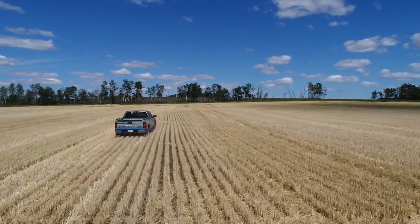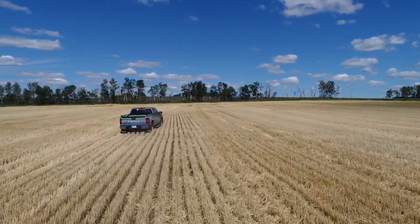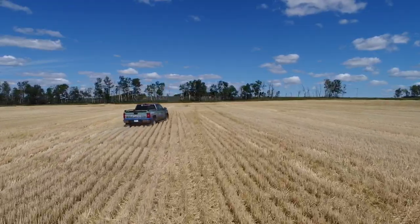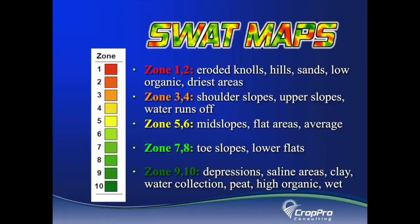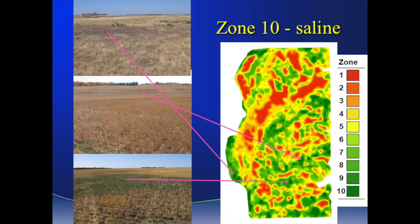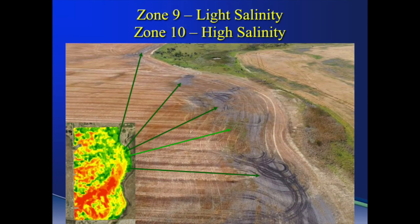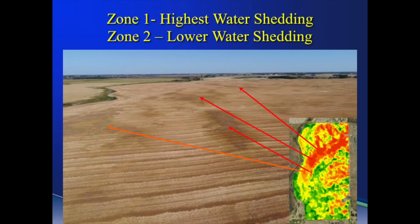Ground truthing all the layers is extremely important. Our expert agronomists drive the fields looking at all the layers and the various SWAT maps that were created to make sure that it matches the field perfectly. All the salinity should be in the same zone, water collecting areas should be in the same zone, high and dry soil should be in the same zone — that's what makes a good SWAT map.